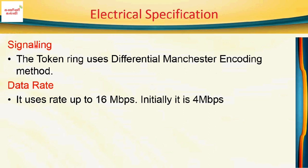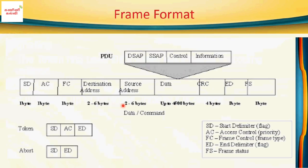Regarding electrical specifications — that is, the signaling and data rate used — Ethernet uses different types of encoding methods, but token ring uses differential Manchester encoding. Ethernet operates at 10 Mbps, 100 Mbps, and even Gigabit speeds, but token ring speed is up to 16 Mbps. The initial speed was 4 Mbps, and it has been increased to 16 Mbps.